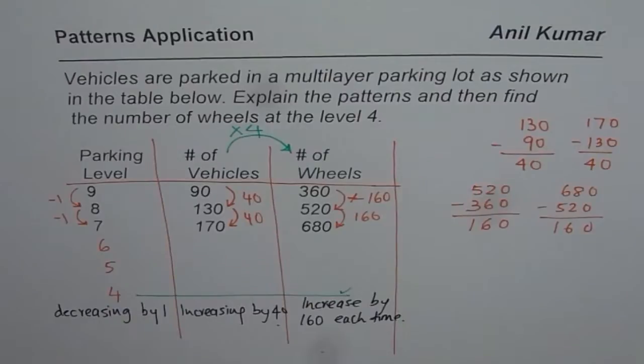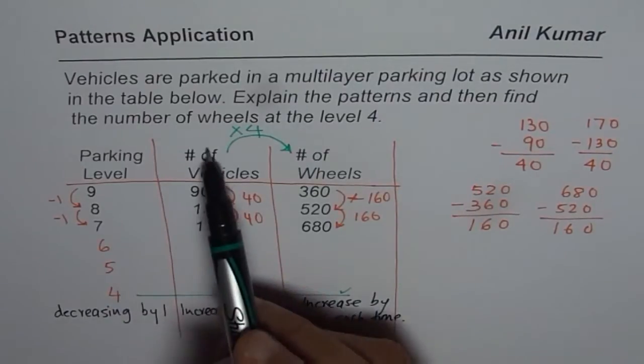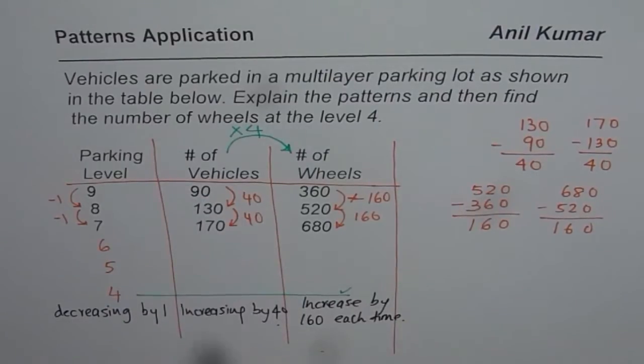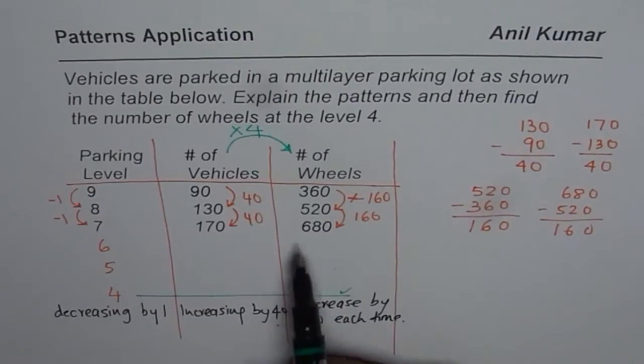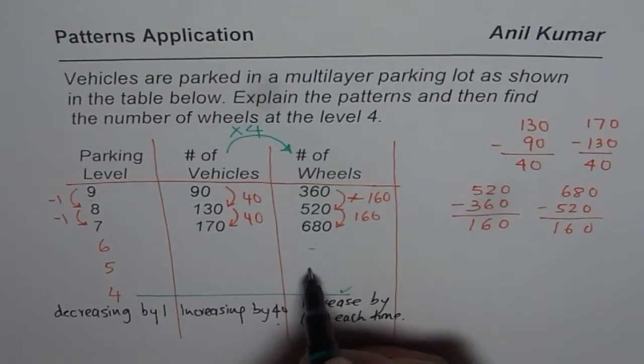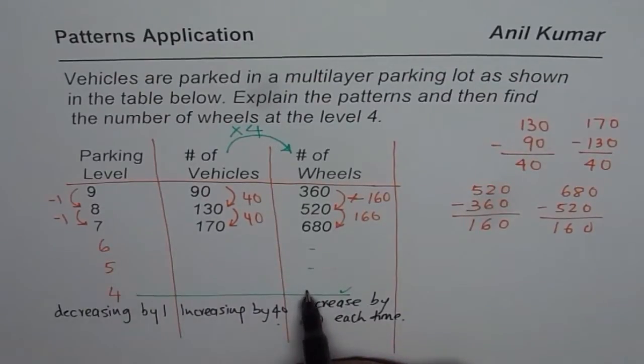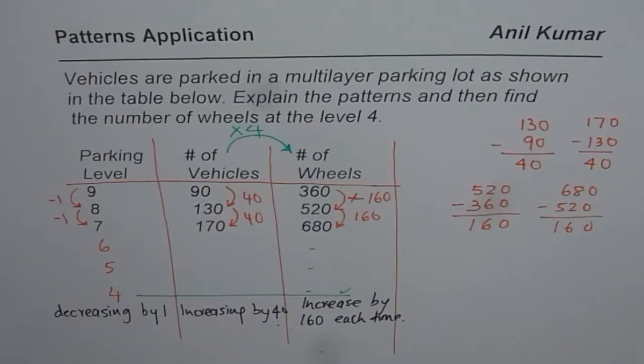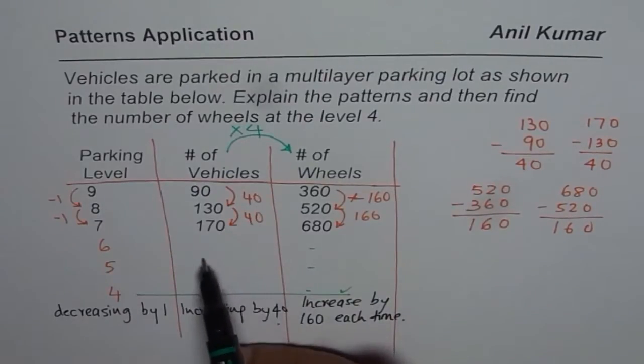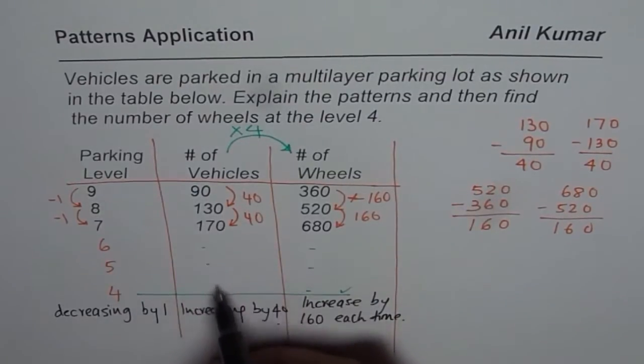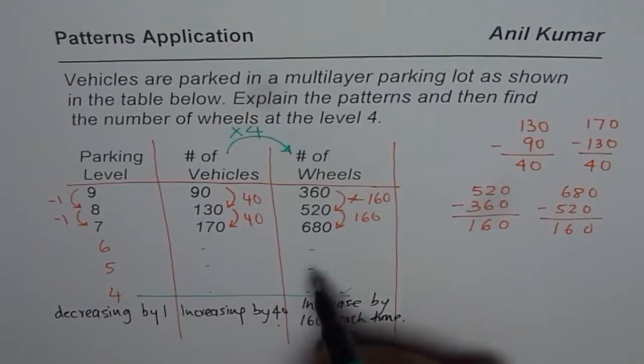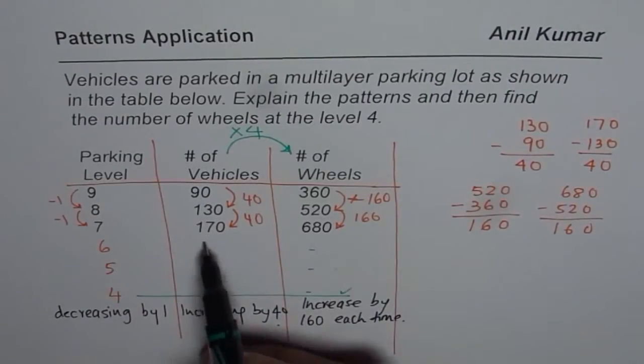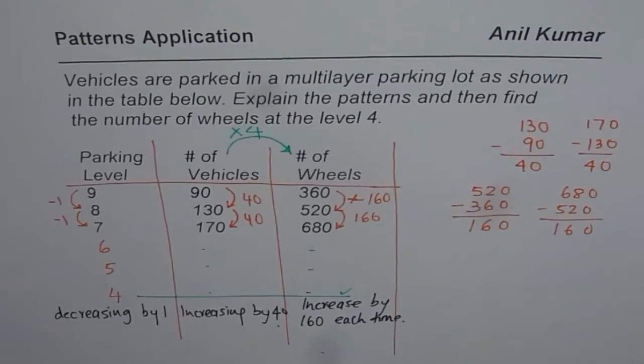Well, let's figure it out. One way is we could go by number of vehicles then multiply by 4. Or we could go by number of wheels and get the answer. Either way it works. So keep on adding 160 to get the numbers for level 6, 5, and then 4. Or you could increase by 40 and then multiply by 4. You do this way, I will do that way, and let us see what our answer is.